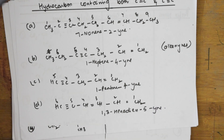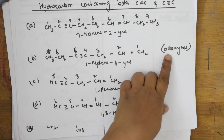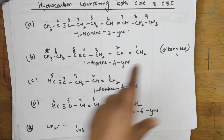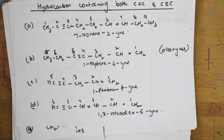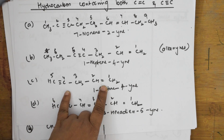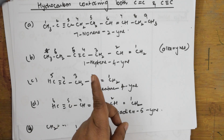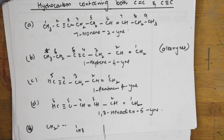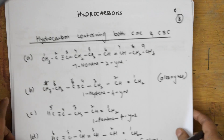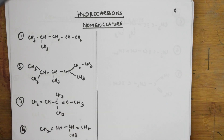So that's how you name alkenes, alkynes, and unsaturated hydrocarbons. Remember: when a hydrocarbon contains one double bond and one triple bond, it is called an alkenyne. The parent chain is numbered so both bonds get the lowest possible numbers, and if they are at equal positions, the double bond is given priority over the triple bond. In the next session we will cover alcohol, aldehyde, ketone, carboxylic acid, cyanide, and isocyanide nomenclature.